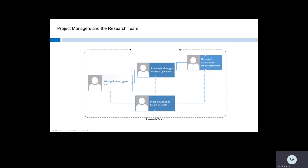The PI is the leader of the team. The research manager supports the PI by overseeing research operations, supervised personnel, financial management, and navigating departmental and institutional procedures. The research coordinator reports to the research manager and is responsible for bringing the protocol to life. They may manage the site regulatory file, recruit and consent study participants, manage IRB correspondence, collect and enter data, or all of the above.